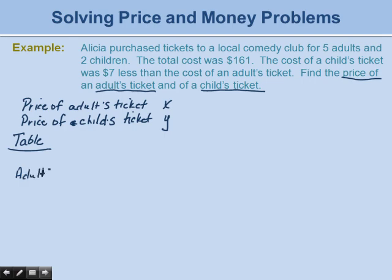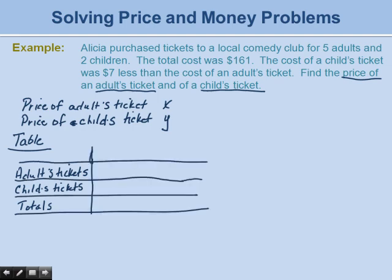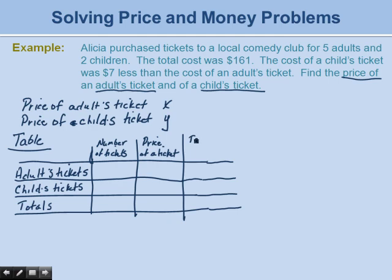For price and money problems it's helpful to use a table. We use one row for each type of ticket — one for adult tickets, one for children's tickets — and a third row for totals. The columns are: number of tickets, price per ticket, and total cost, where total cost equals number of tickets times price.